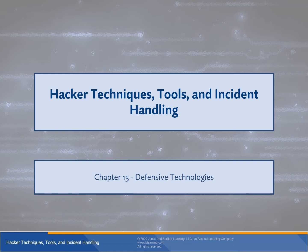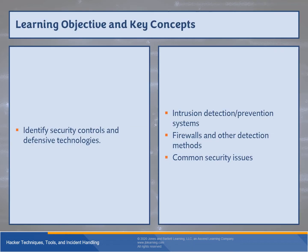Welcome back for the rest of Chapter 15 of CCT 250, Defensive Technology. Our key learning objective is identifying security controls and defensive technologies. The key concepts we'll cover are IDS and IPS systems, firewalls, other common detection methods, and security issues.